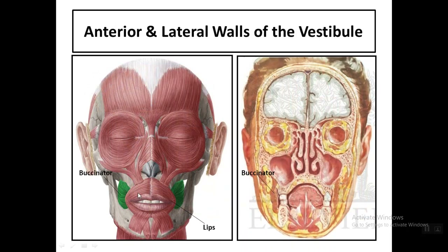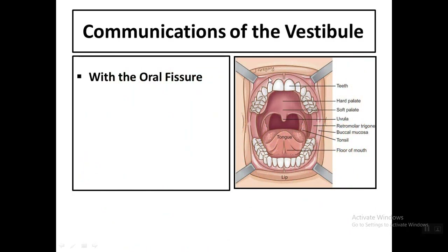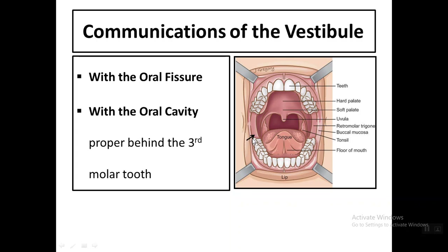The vestibule is bounded by the lips and the cheeks. The cheeks are formed by the buccinator muscle, which is supplied by the facial nerve. This small space between the cheek and the teeth is the vestibule. It communicates anteriorly through the oral opening and oral fissure with the exterior, and posteriorly, behind the third molar tooth, with the mouth cavity proper.